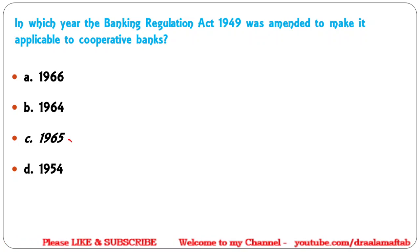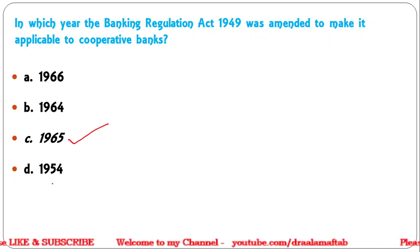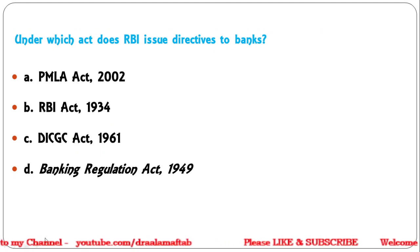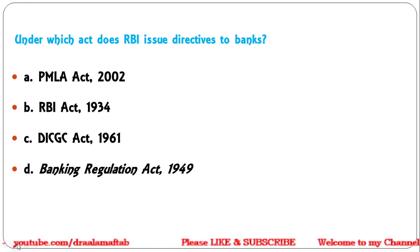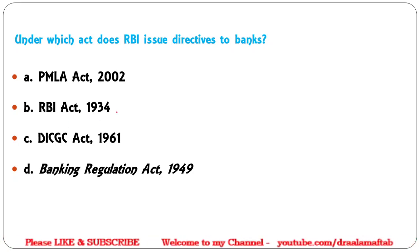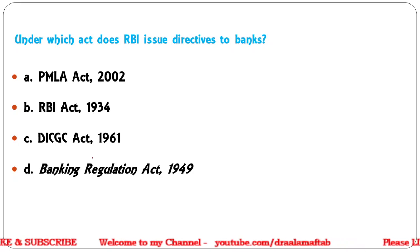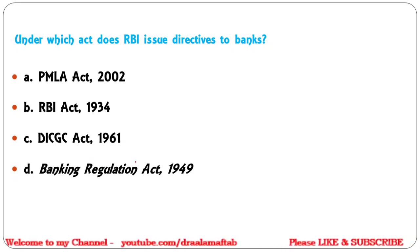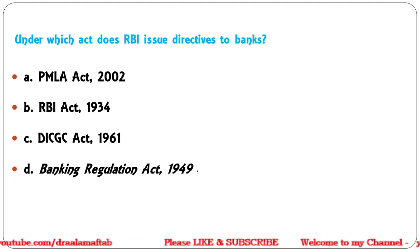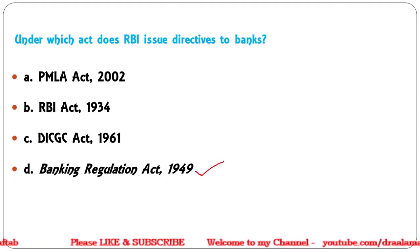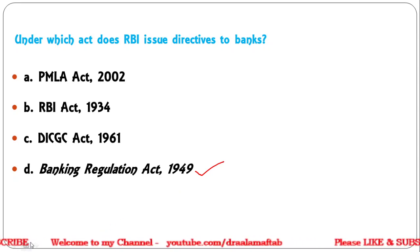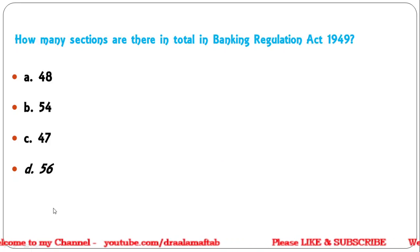Next question: Under which act does RBI issue directives to banks? Options: PMLA Act 2002, RBI Act 1934, DICGC Act 1961, or Banking Regulation Act 1949. The correct answer is Banking Regulation Act 1949. Under this act, RBI issues directives to all banks.